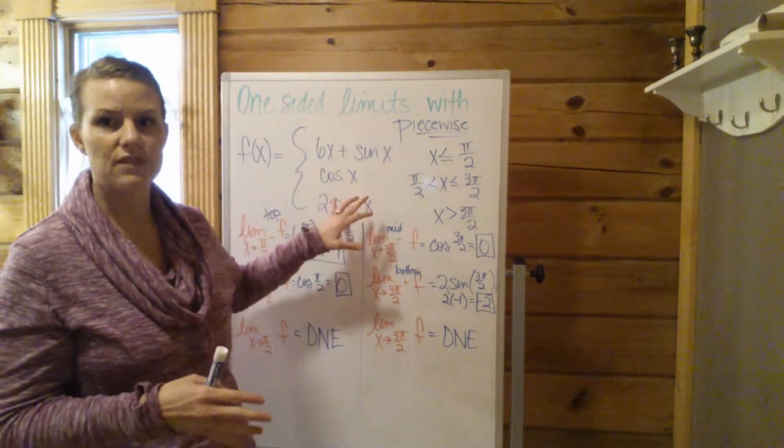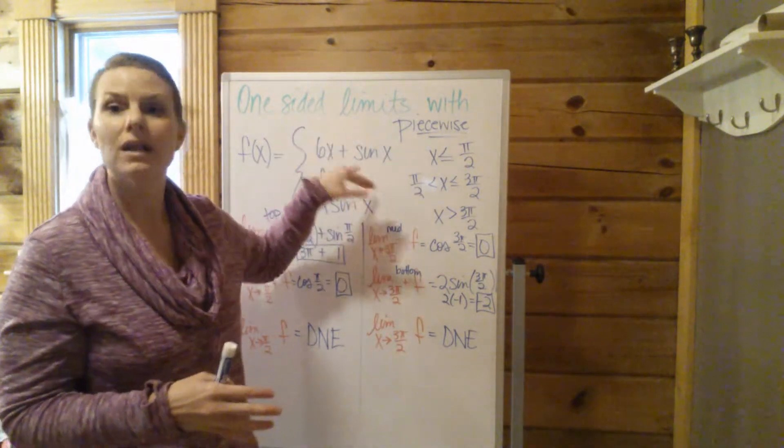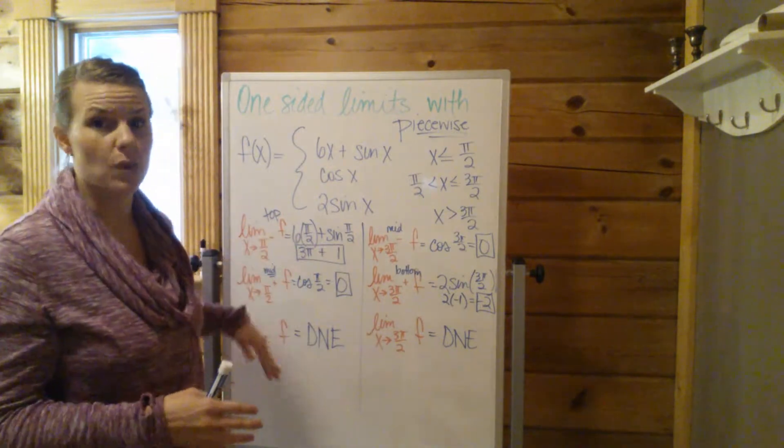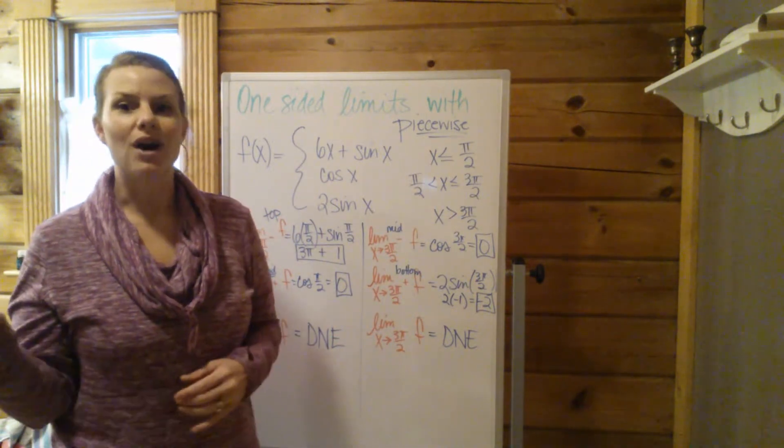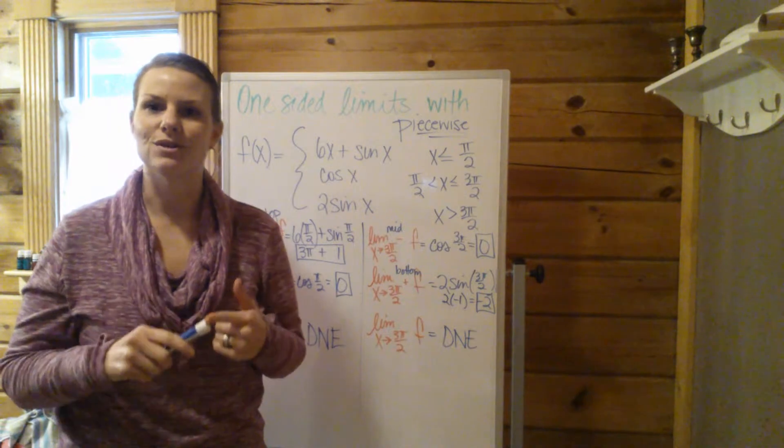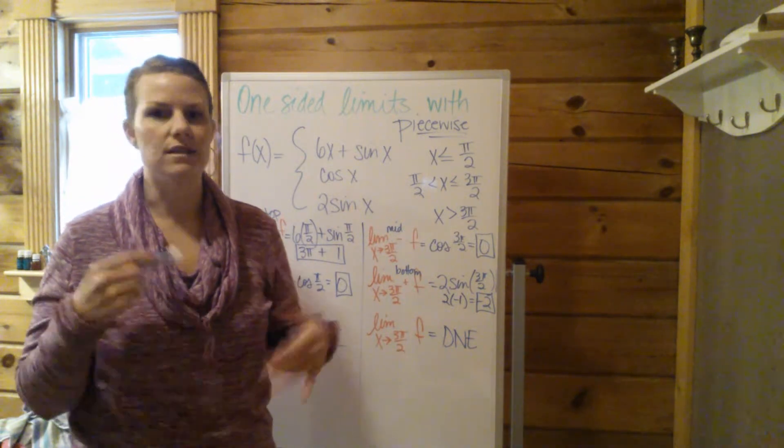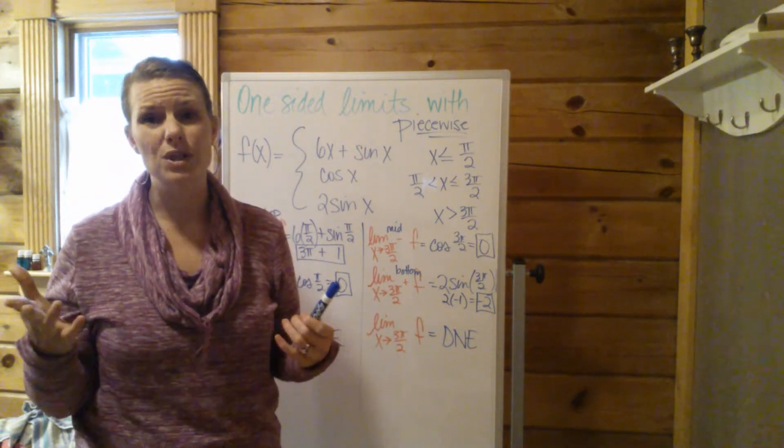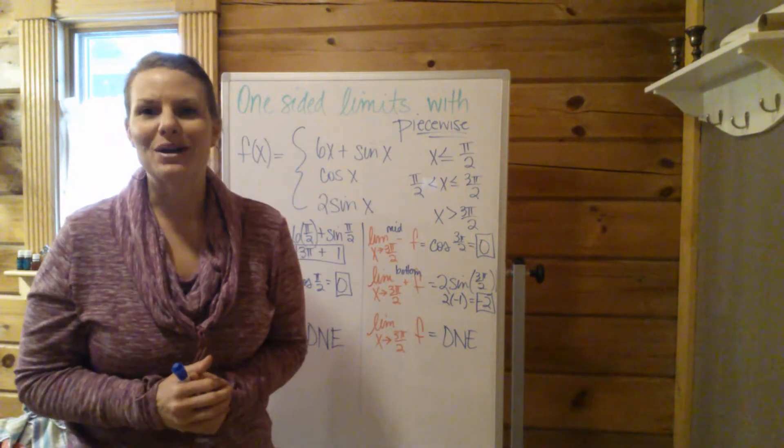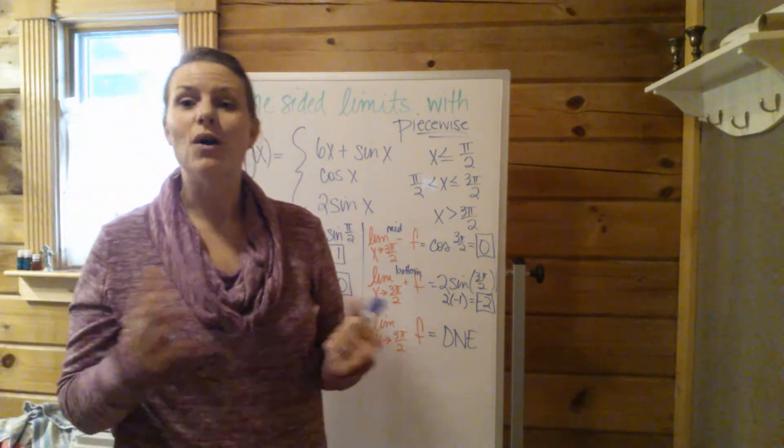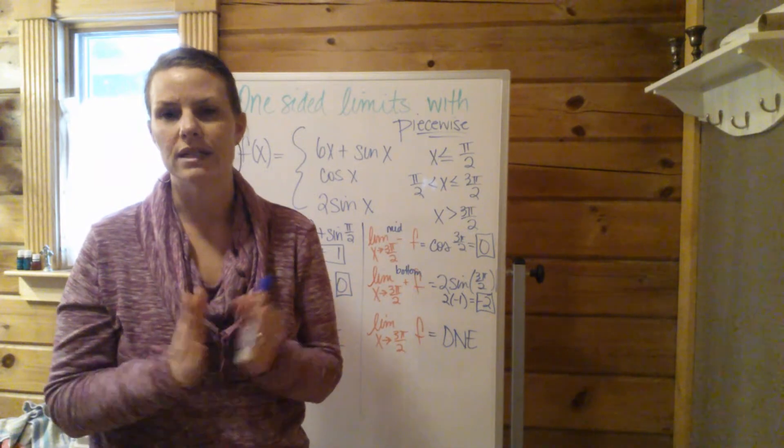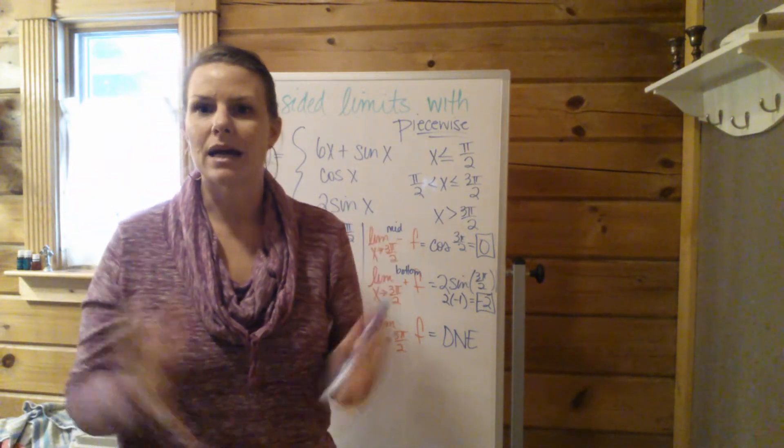One-sided limit, piecewise function. Just figure out what line you're plugging into for each one. That's all you're doing. And then yes, you are going to have to review that unit circle. So you're going to have to know your sines and cosines and all that good stuff. Unfortunately, I'm sorry, but you're going to have to know that stuff too. So hopefully that helps and hopefully this simplifies it so you don't get so stressed out about it.